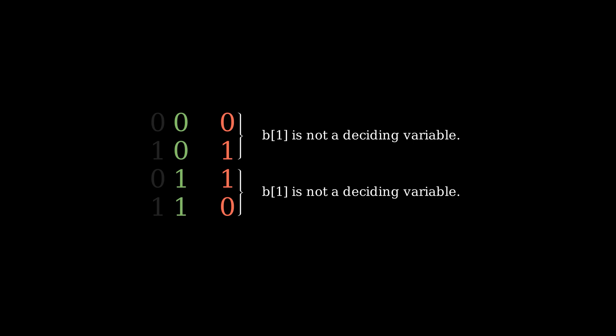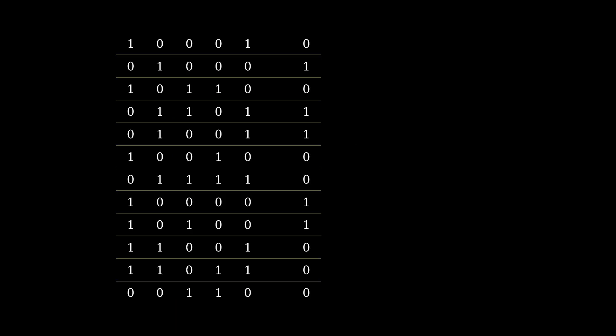Therefore, we need to loop through the n inputs and the variable values to identify potential deciding variables by checking the consistency of the output values. We will print OK if there is at least one deciding variable for a given test case. Otherwise, we will print lie. Here is an animation that works out a slightly more complicated case as described.